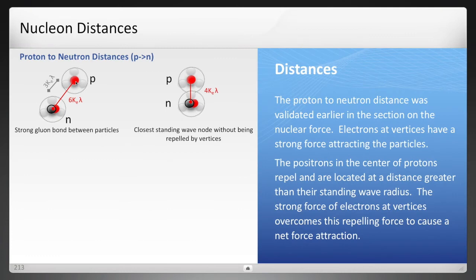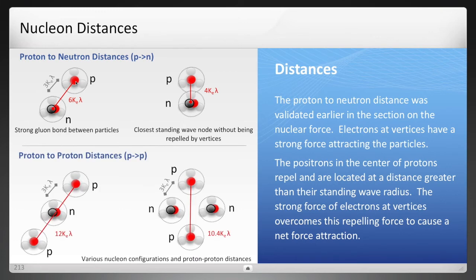And here are the nucleon distances, or should I say best guess, estimated for the proton to neutron distance. There are different geometric arrangements. So two have been put together here, and likewise for proton to proton distances for the different shapes.